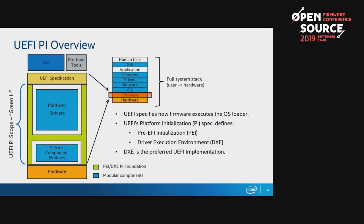From a UEFI platform initialization perspective, the UEFI spec is the interface between the OS and the hardware. We deliver the silicon code as the FSP binary, and then you have all these platform drivers. We have what we call the green H — the PEI and DXE Foundation — a set of reliable interfaces you can use to initialize your firmware, so that silicon and platform code can be swapped out more easily. The UEFI PI spec defines the PEI and DXE phases, and that's what we use in the minimum platform. The minimum platform complies with the UEFI PI specifications, whereas many bootloader solutions today do not.